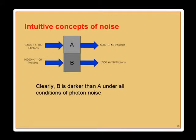Noise is important in terms of discerning contrast between adjacent objects and pixels. If we increase the number of photons, then B is consistently darker than A under all conditions of photon noise, assuming a totally noiseless system elsewhere — because you can also have electronic noise. This is what's called being quantum limited. Things are going to get a little more mathematical as we go past these intuitive concepts.